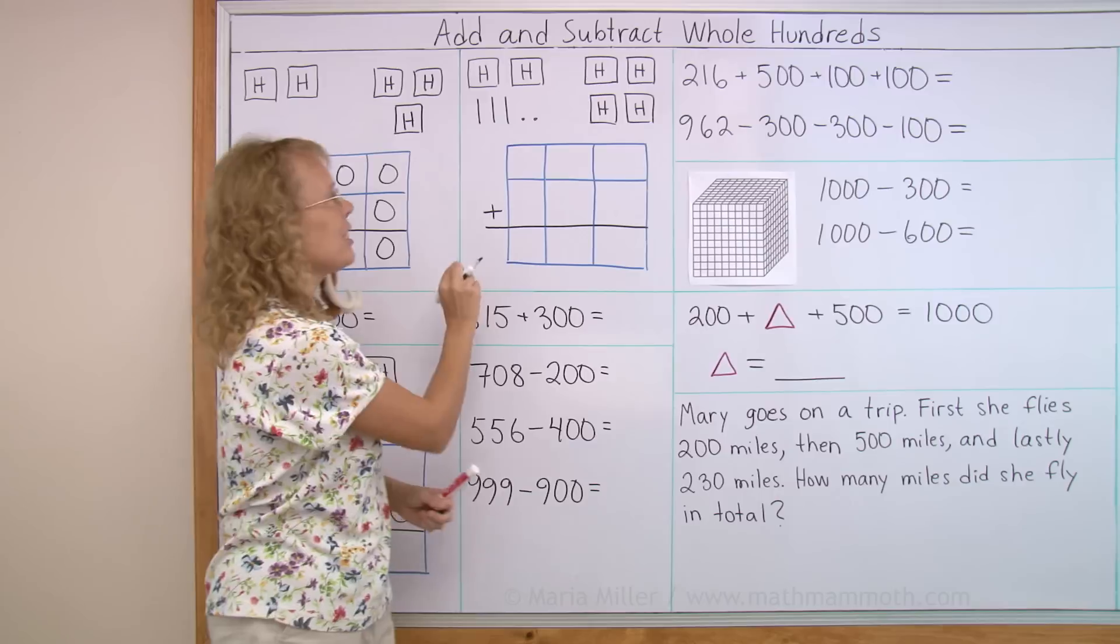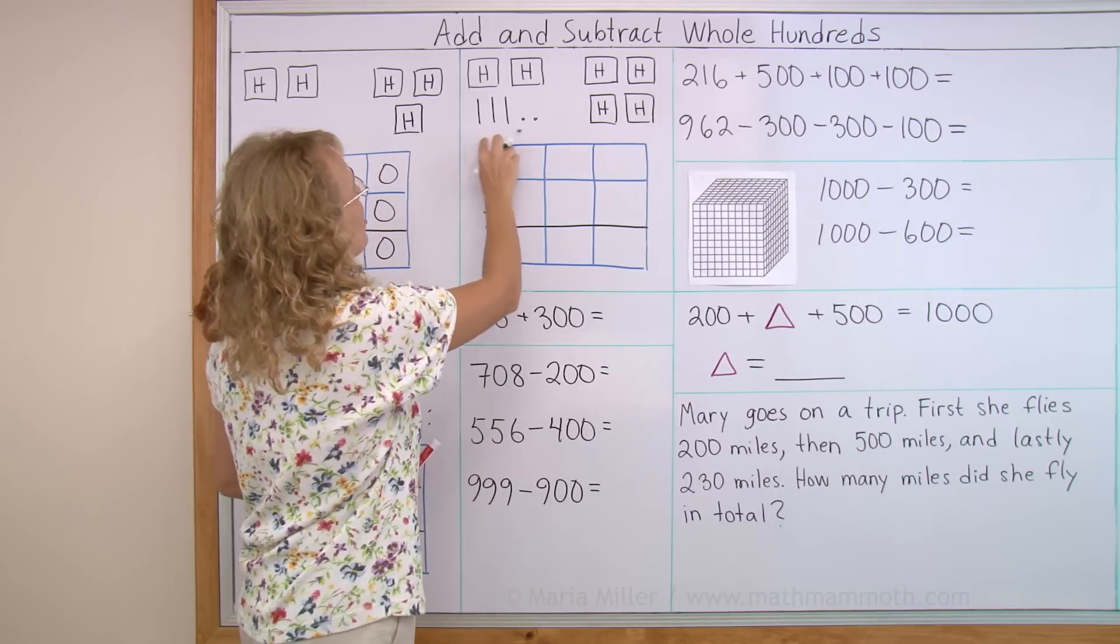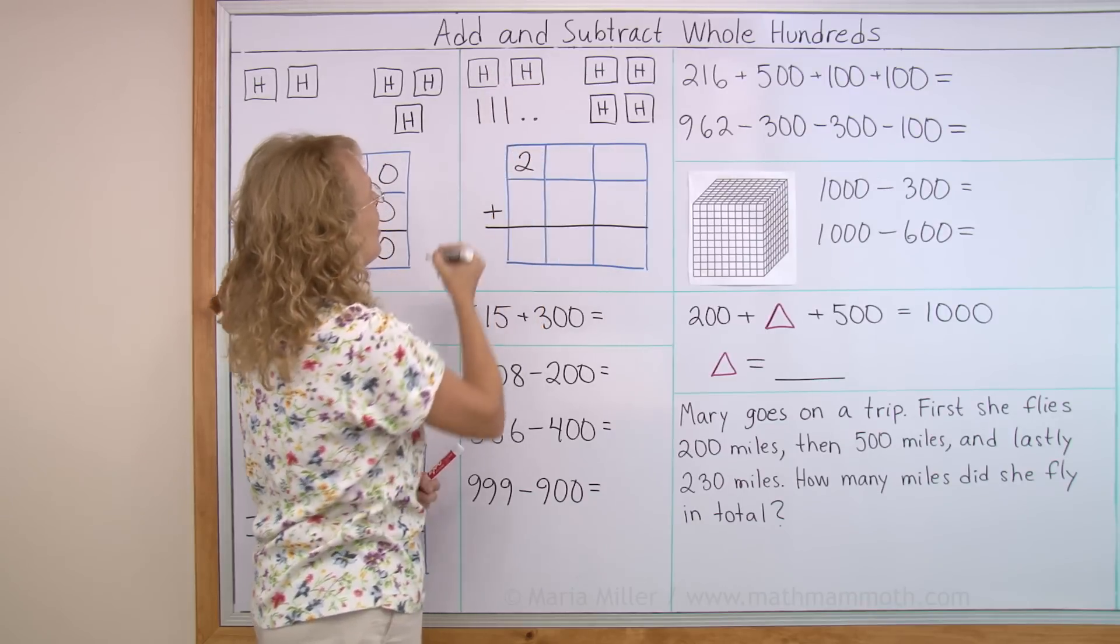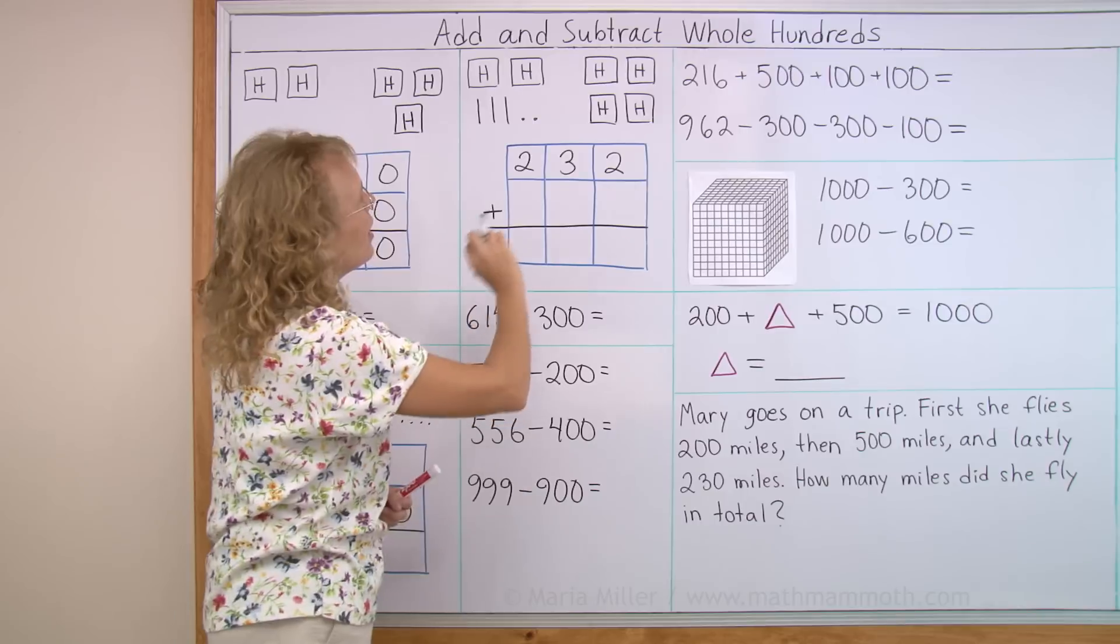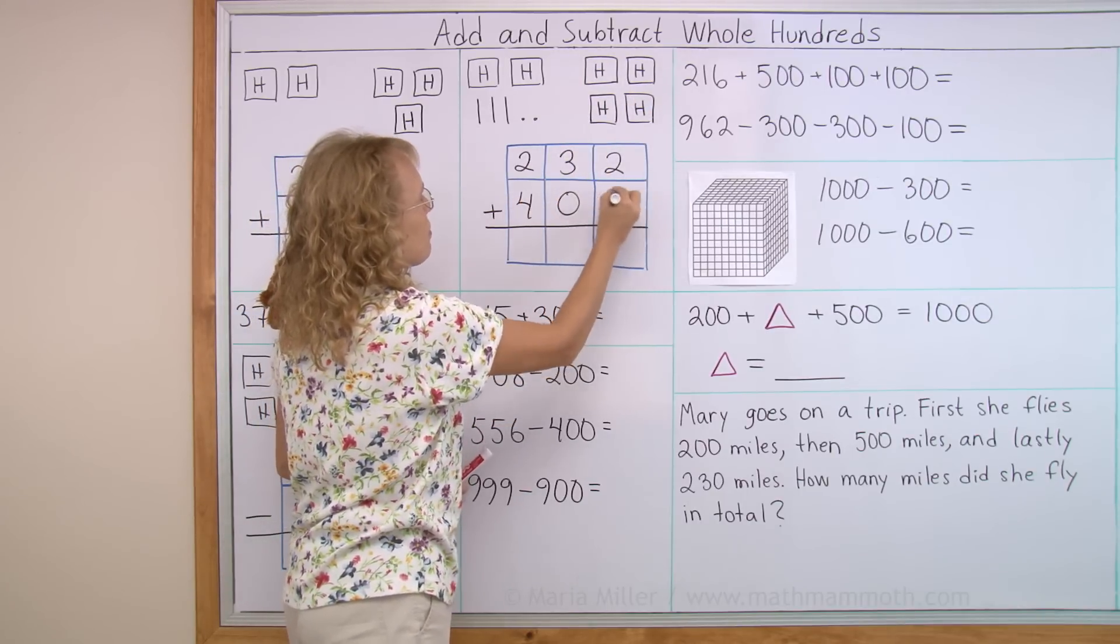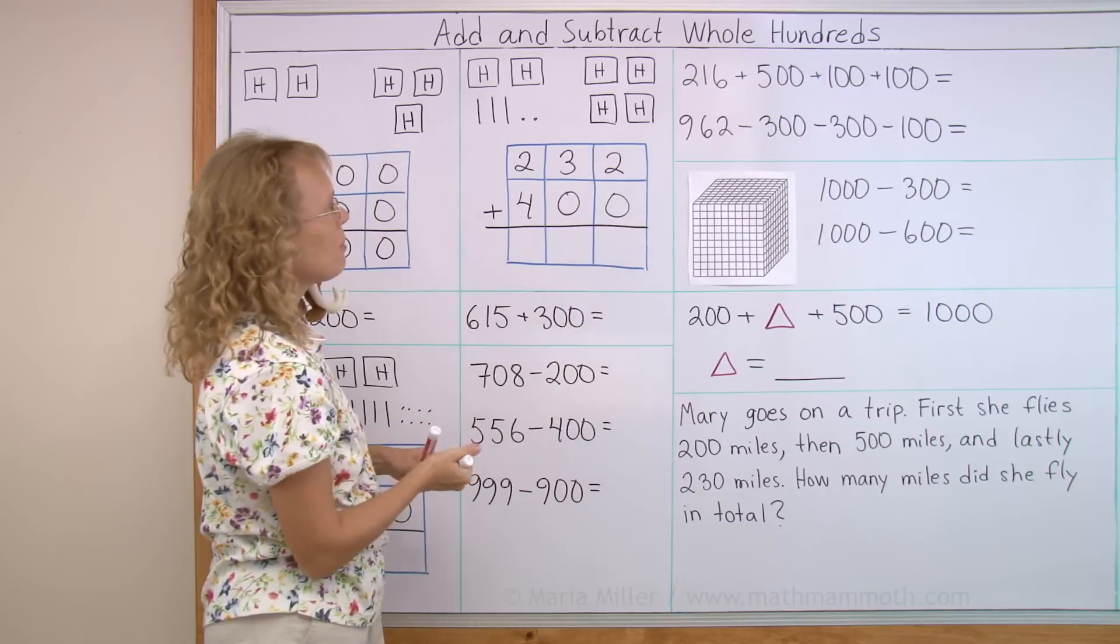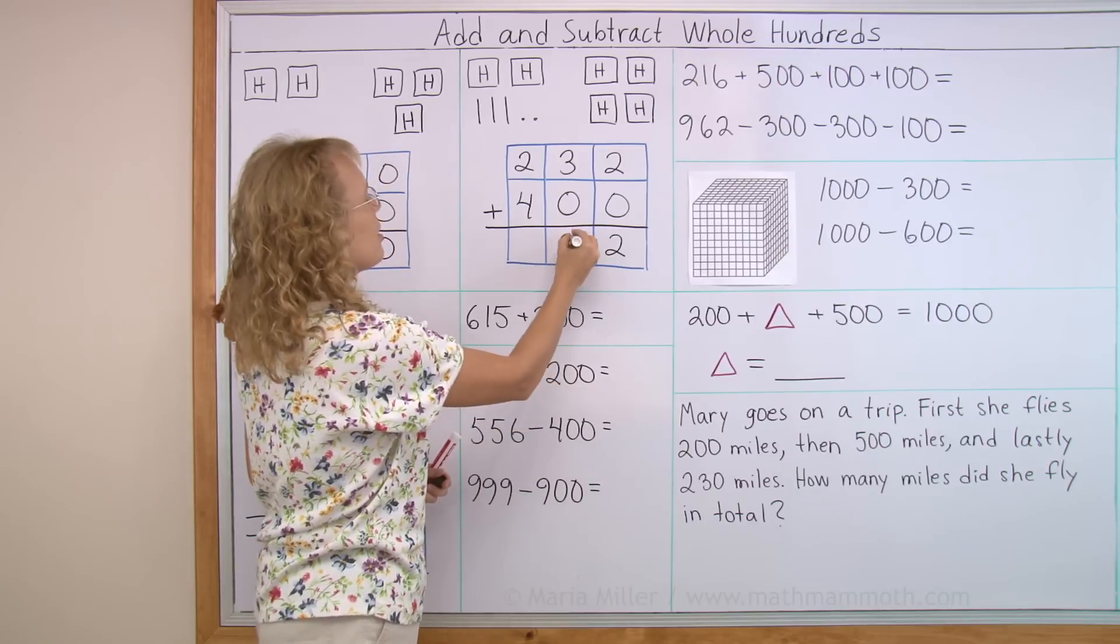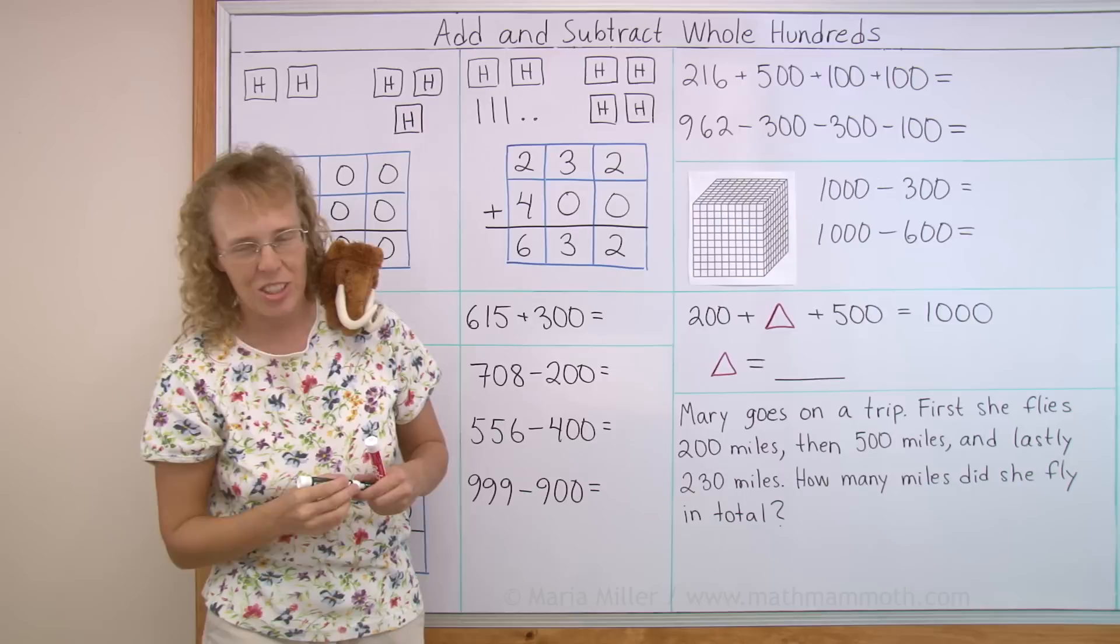This was super easy. This one is a teeny tad more difficult, but still easy. My first number to add is this one here. You see it has two hundreds, and those are the tens, three tens, and then two, two little dots. And then I add this, which is 400. And now we add here, in the ones column, 2 and 0 makes 2. In the tens, we get 3, and then in the hundreds, 2 plus 4 is 6, 632.